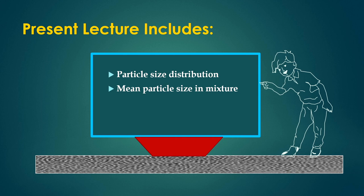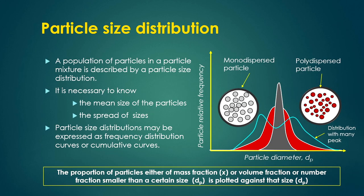This is very important to know — the mean particle size in the mixer — because for assessing any process yield or process performance, you need to calculate what would be the particle size, especially for adsorption processes, reaction engineering, reaction processes based on catalyst particles, and what will be the mean size of that catalyst particle. So how can that distribution be expressed? First of all, you have to know what will be the particle size distribution.